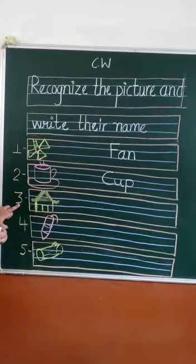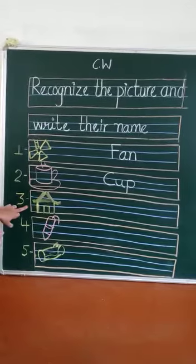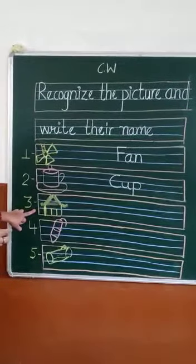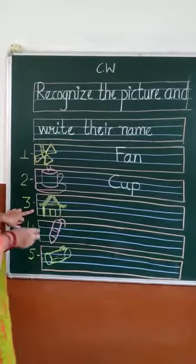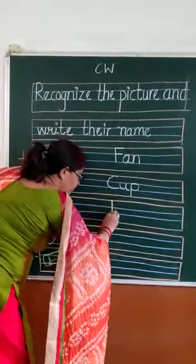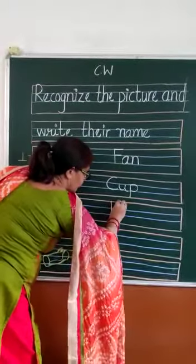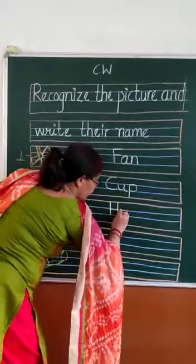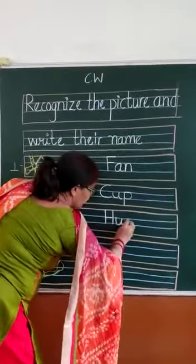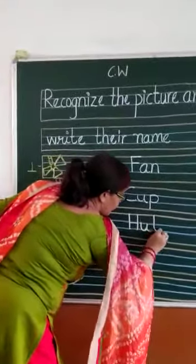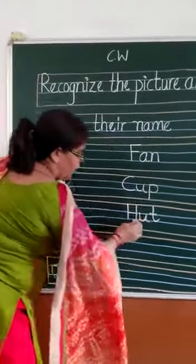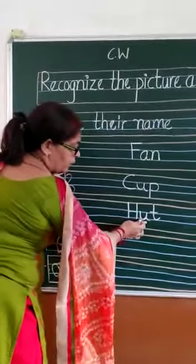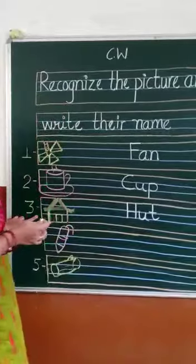Next, number three. This is a hut. H, U, T, hut. H, U, T, hut. Okay?